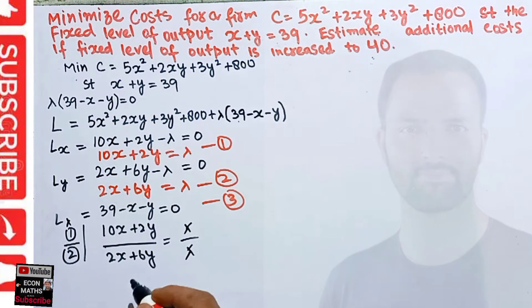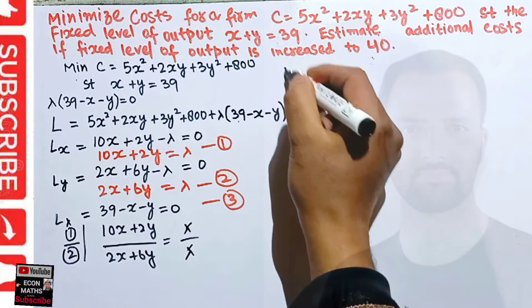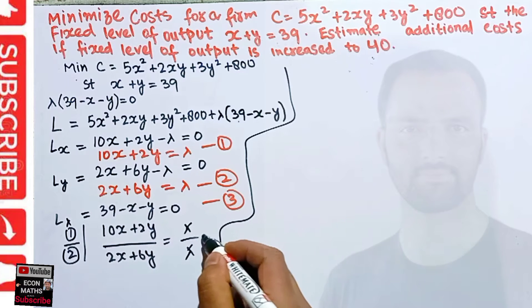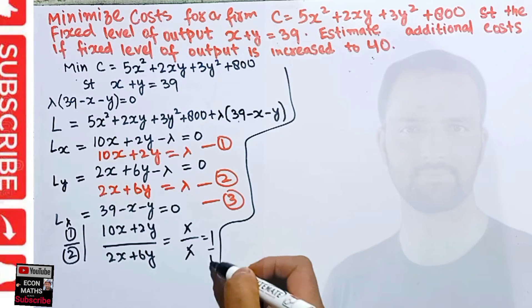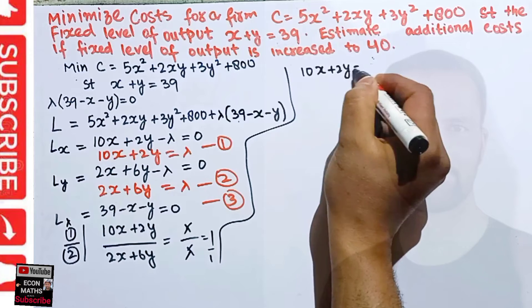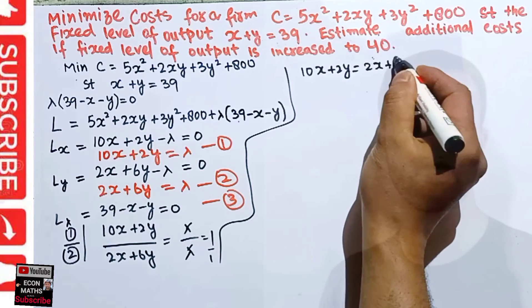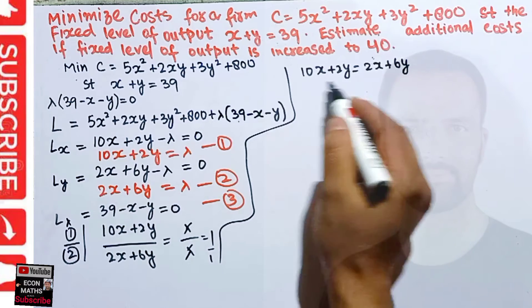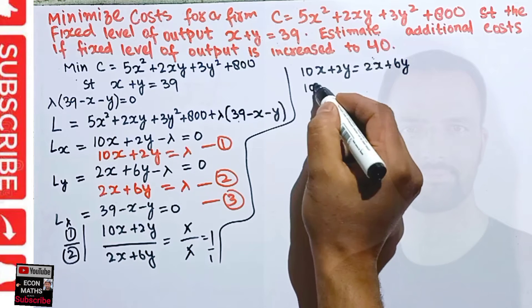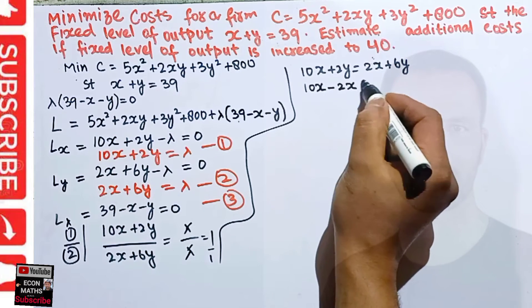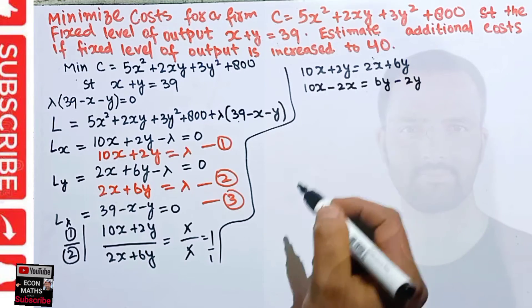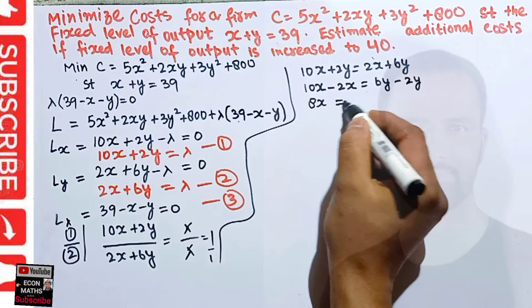So we have (10x + 2y) / (2x + 6y) = 1. Cross-multiplying gives: 10x + 2y = 2x + 6y. Transposing terms: 10x − 2x = 6y − 2y, which gives 8x = 4y.